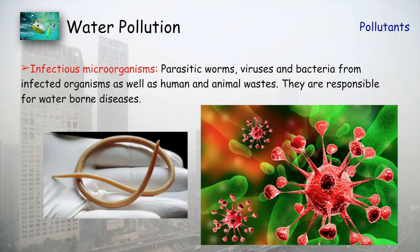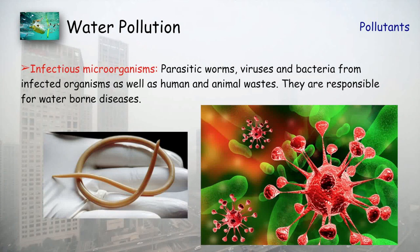Third is infectious microorganisms. Parasitic worms, viruses, and bacteria from infected organisms, as well as human and animal waste, are responsible for waterborne diseases. These bacteria, viruses, and parasitic worms decrease the quality of water, making it undrinkable, and are therefore considered pollutants.